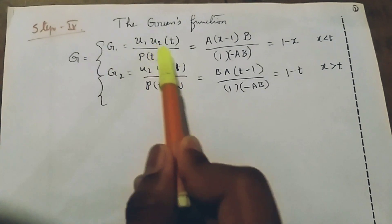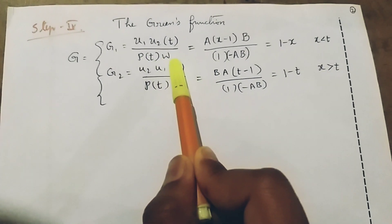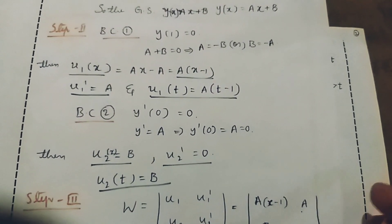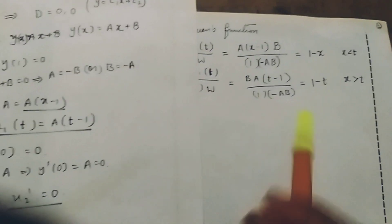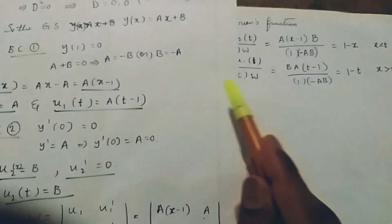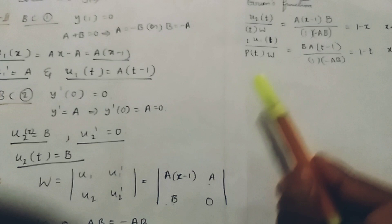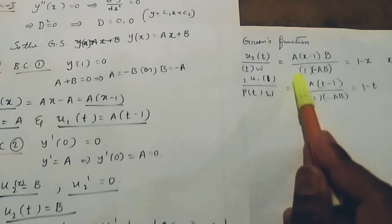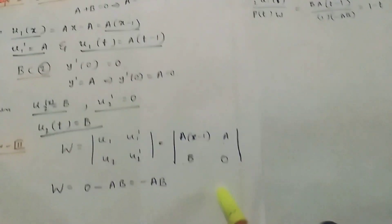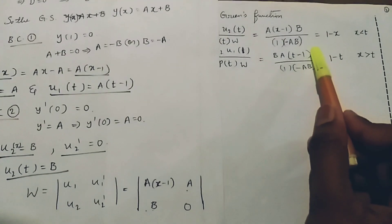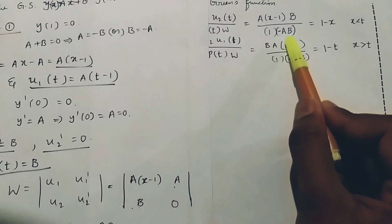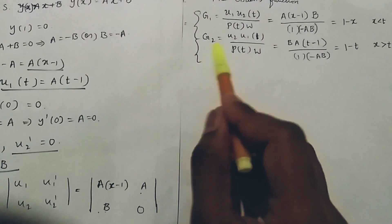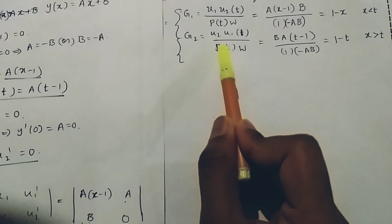Step four: the Green's function g₁ equal to u₁ times u₂(t) divided by p(t) times W. Here u₁ equal to a(x minus 1) and u₂(t) equal to b. The coefficient p(t) of the second derivative is 1, and the Wronskian W equals minus ab. This simplifies to (x minus 1) divided by minus 1, which equals 1 minus x, for x less than t.